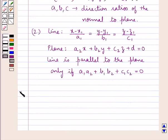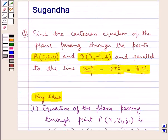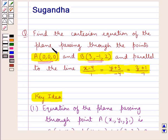Let's now move on to the solution. We are given two points A and B and the equation of a line. We have to find the Cartesian equation of the plane which passes through these two points and is parallel to the given line.